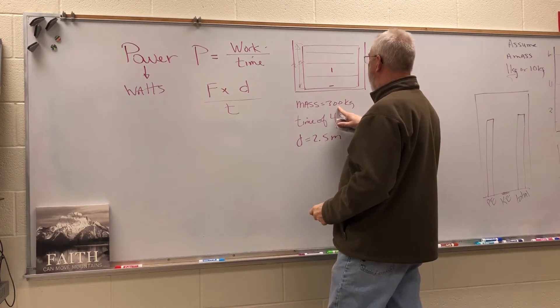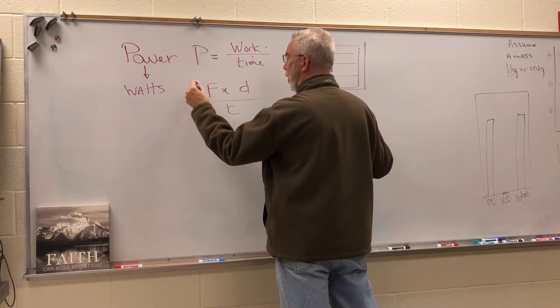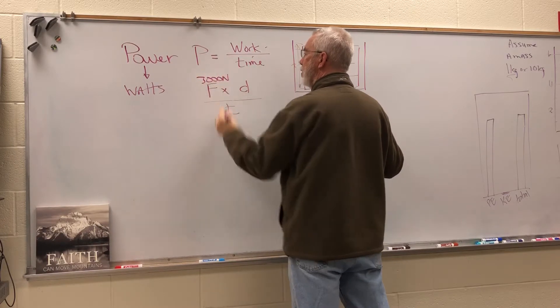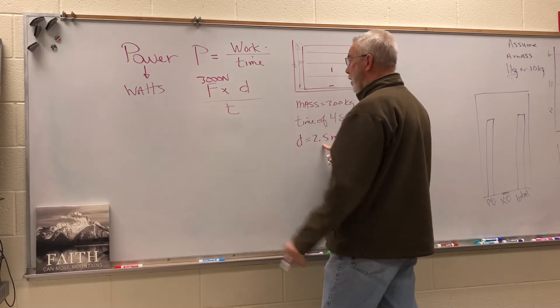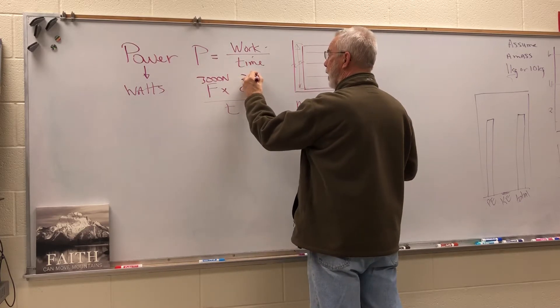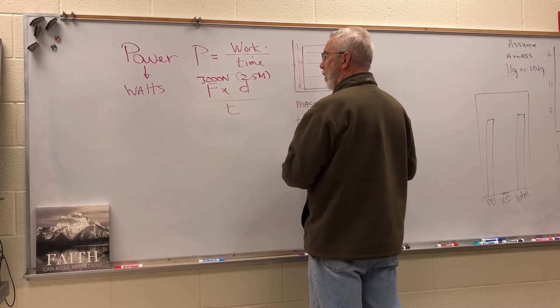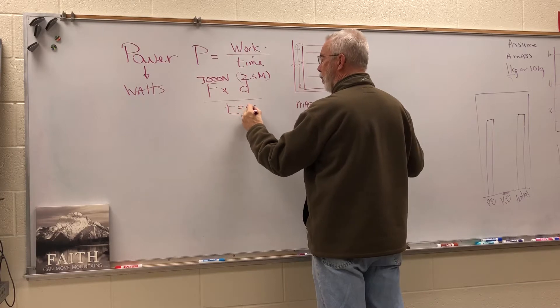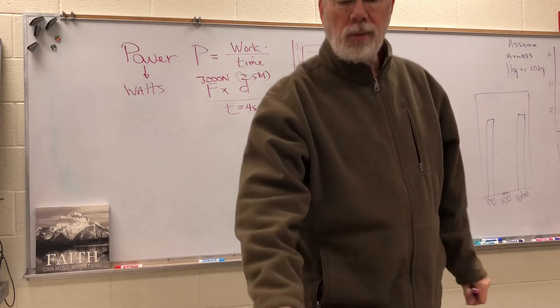Well, the garage door has a mass of 300 kilograms, so the force we're going to need is 3000 newtons to raise that door. And the distance it's going to be raised is 2.5 meters right there, and the time is going to be four seconds. So let's plug those numbers in and see what we get.